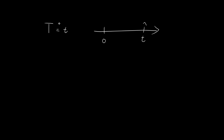In order to find the distribution of capital T, we're going to consider the probability that capital T is smaller than or equal to small t. This means we want to find the probability that something occurs within this time period, because T will equal small t if something occurs here. So P(T ≤ t) considers all situations where something happens within time 0 to time t.